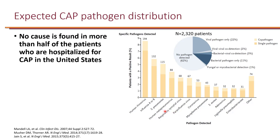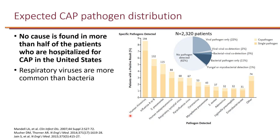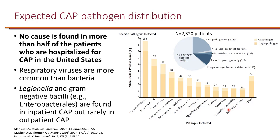The second finding is that viruses are actually more common than bacteria — including human rhinoviruses, influenza, and coronaviruses. While Legionella and Enterobacteriaceae are found among hospitalized patients, they are rarely found in outpatient community-acquired pneumonia — meaning CAP that is not severe enough to require hospitalization and can be treated outpatient.